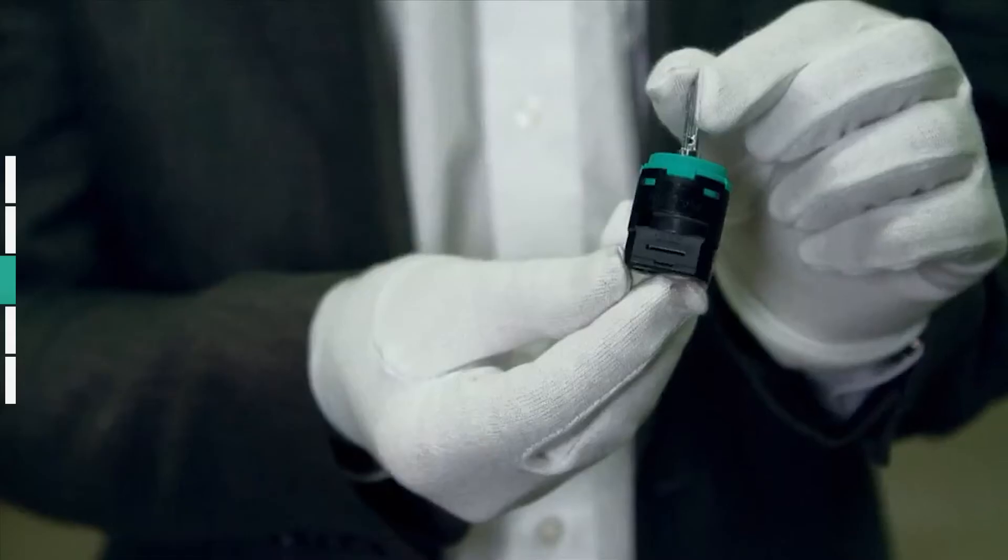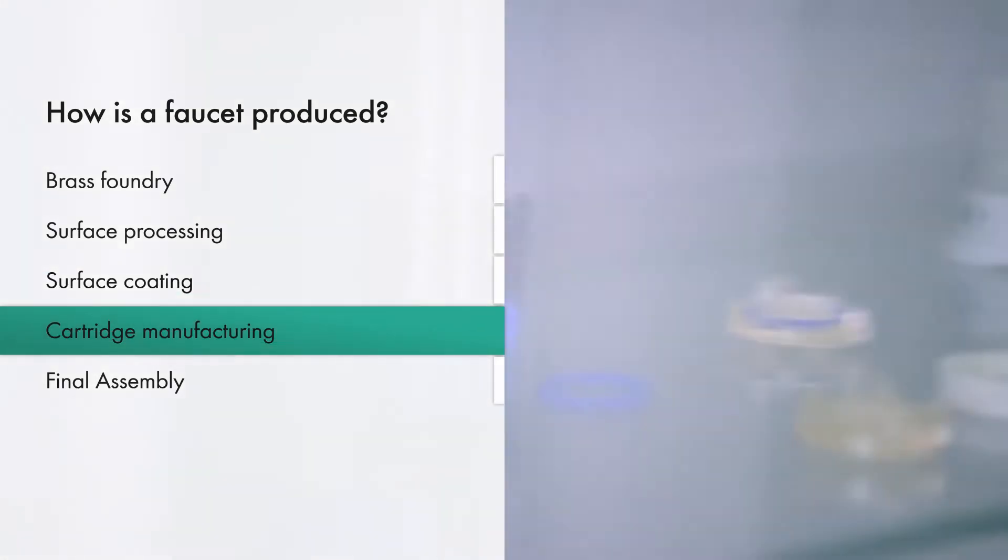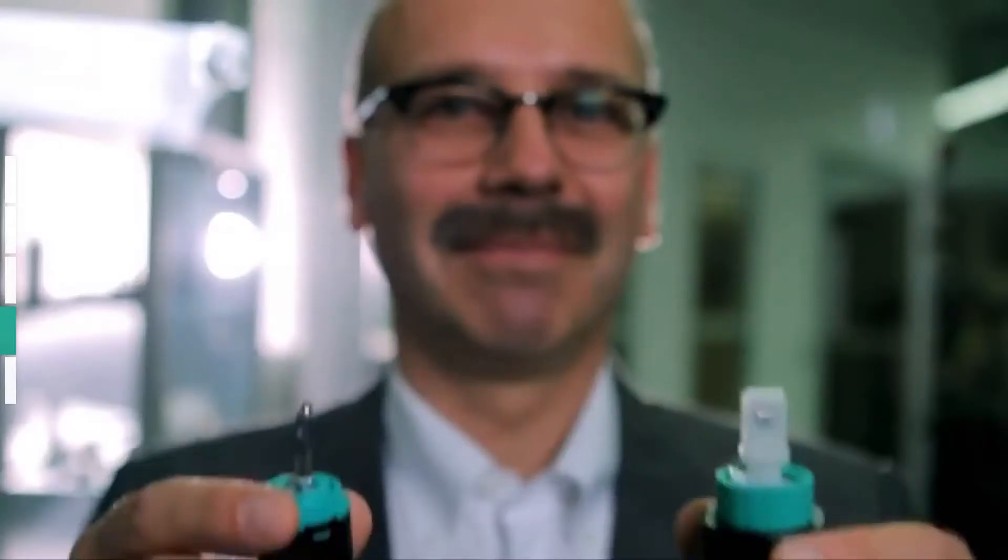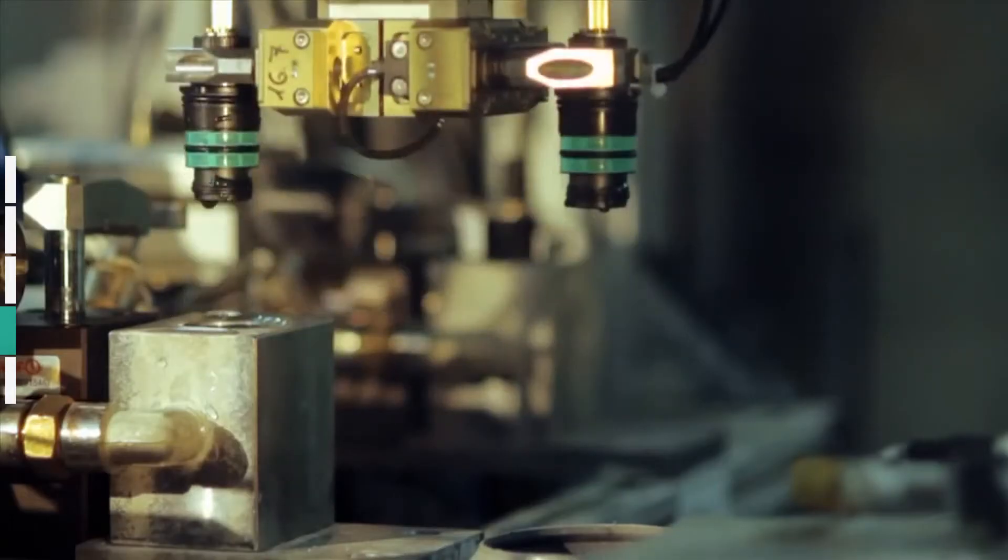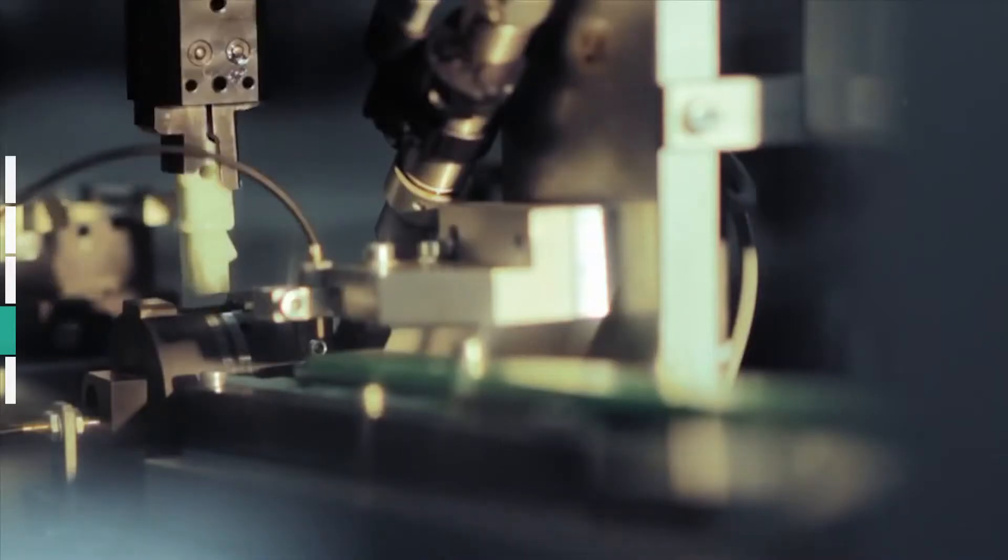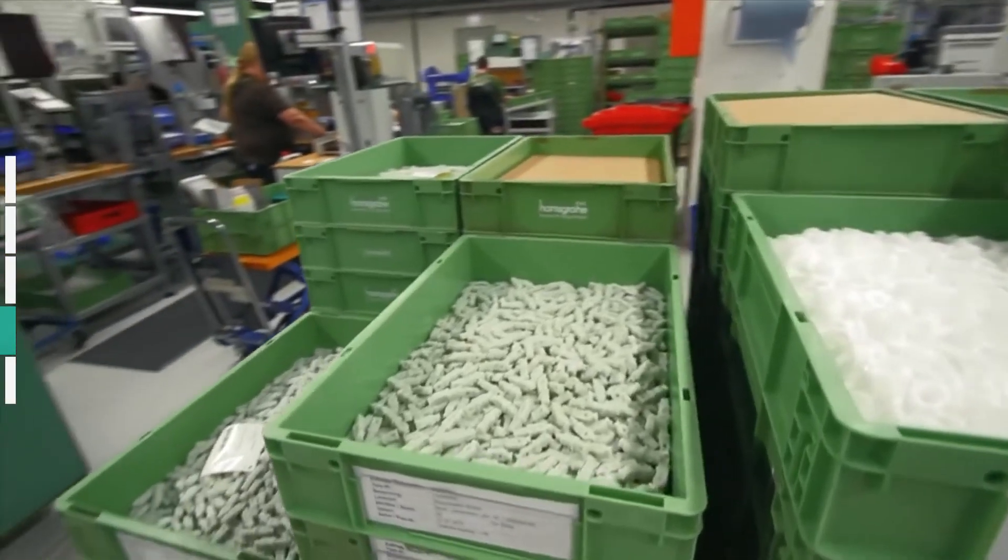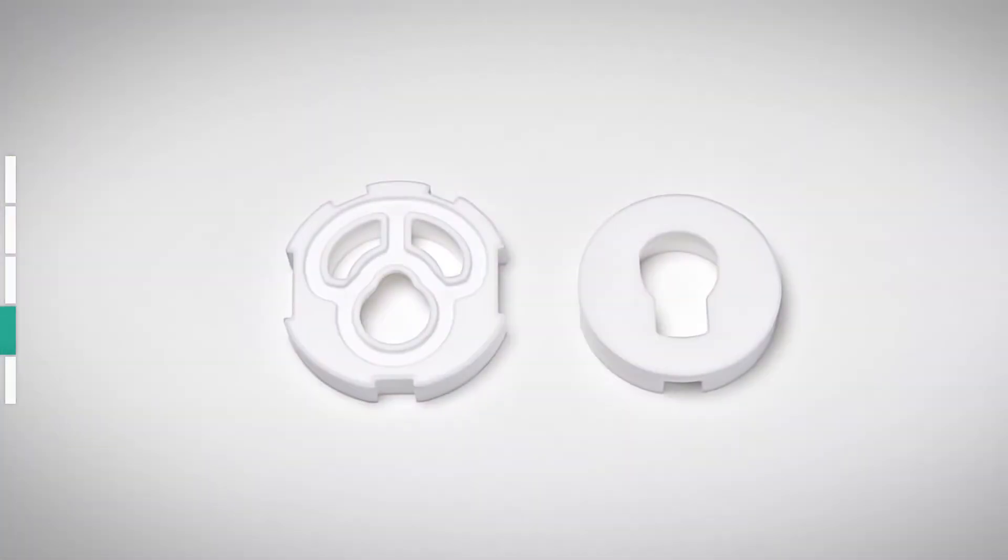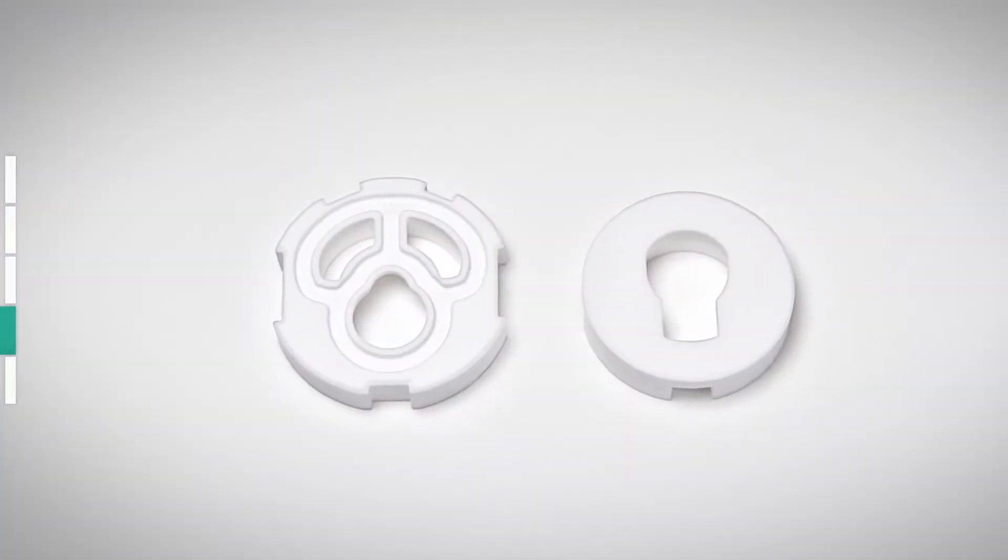Now only the inner workings are missing. The Hansgrohe cartridge manufacturing department is where the mixer core is created. The cartridge can be compared to a car's engine. It has to run smoothly, perform well, and always work. To make sure of this, Hansgrohe manufactures the sophisticated control units for all mixer types in-house. What does a cartridge actually do? It combines the hot and cold water within the mixer, and regulates the water volume.